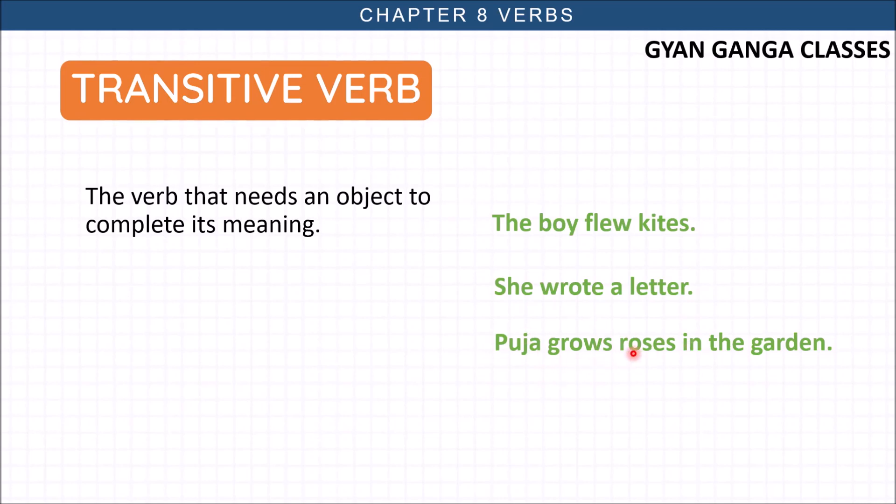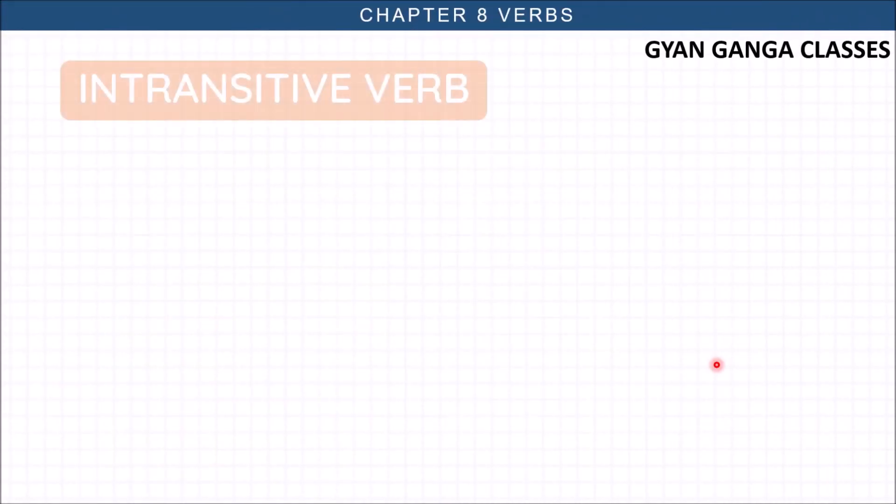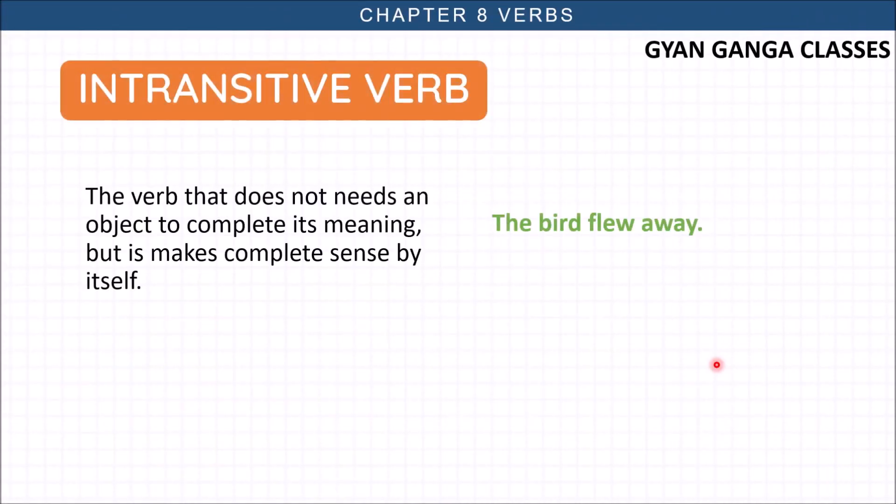Intransitive verb - the verb that does not need object to complete. These are verbs that don't need an object. Birds flew. We don't need anything, this sentence is complete. She swims. She cries. Again both these cases are meaningful without an object, so the verbs are intransitive.